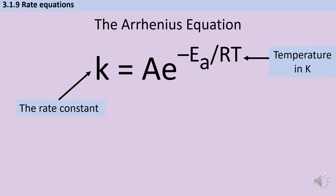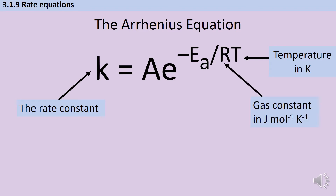Then we've got the temperature, which always needs to be in Kelvin in order for us to get the right number out. And the gas constant R, which you met early on in year 12, has a value of about 8.314 — and you are given that in the exam. The gas constant is in joules per mole per Kelvin.